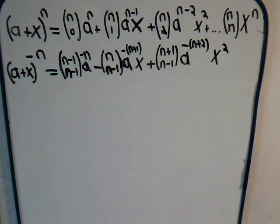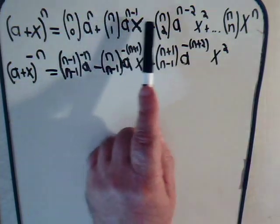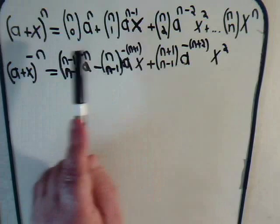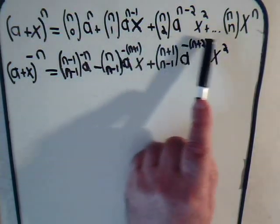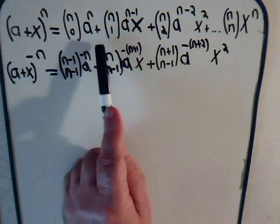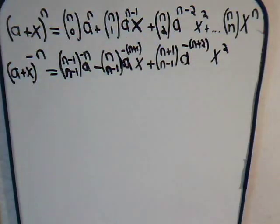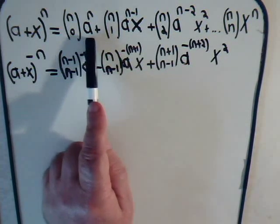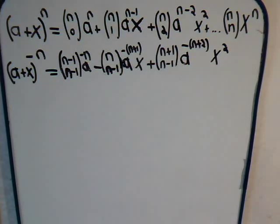Then the next term, well, throughout the series, the upper part of the binomial coefficient stays the same, and the bottom part increases by 1 for each successive term. Likewise, the exponent of x continues to increase by 1 as we go through each successive term, while the exponent of a decreases by 1 as we go through each successive term.